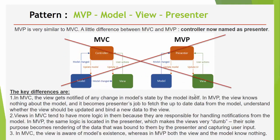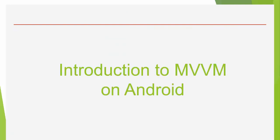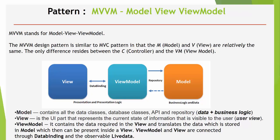So as practice showed, none of these approaches work well for big projects. So the idea was to consider something different, and MVVM on Android was introduced: Model, View, ViewModel. So the MVVM pattern is similar to MVC in having two components, the Model and View. In this case, Model still contains all data classes, database, API, and repository — so data and logic. The View is still the UI part that represents the current state of information visible to the user.